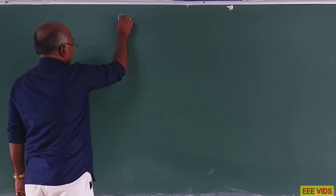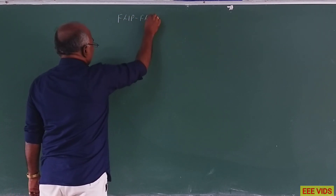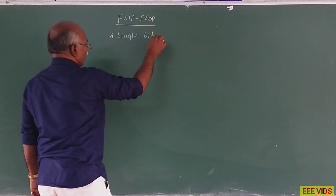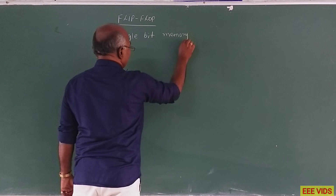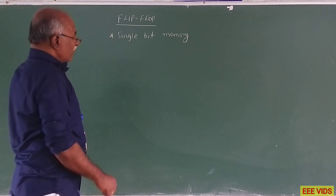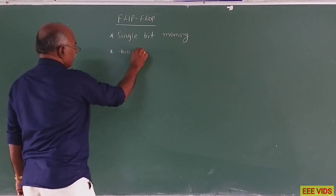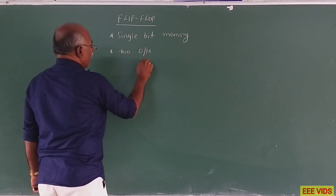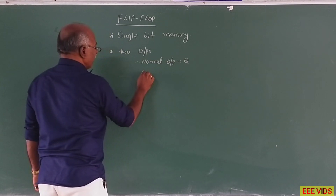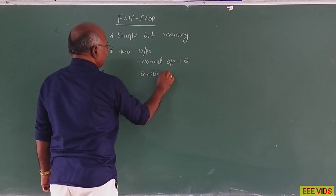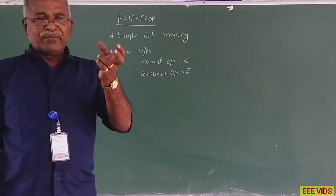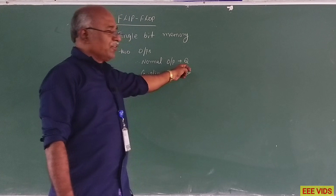It is a single-bit memory — flip-flop, defined as the single-bit memory. One bit binary, one bit store. A single bit in binary, and the bit may be 0 or 1. All flip-flops have two outputs. One output is a normal output, indicated by Q. Another one is the complement output, indicated by Q-bar. If Q is 1, Q-bar is 0. If Q is 0, Q-bar is 1.